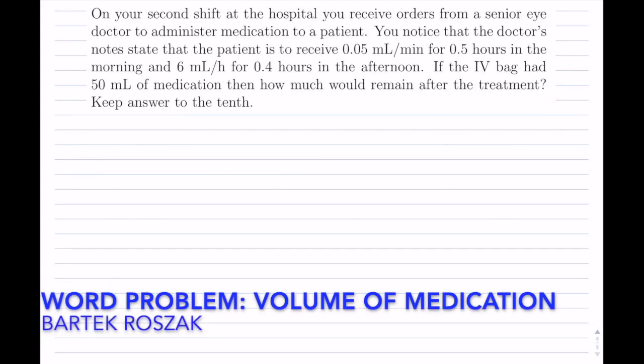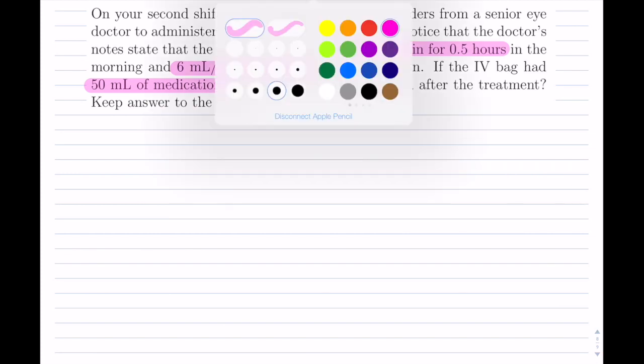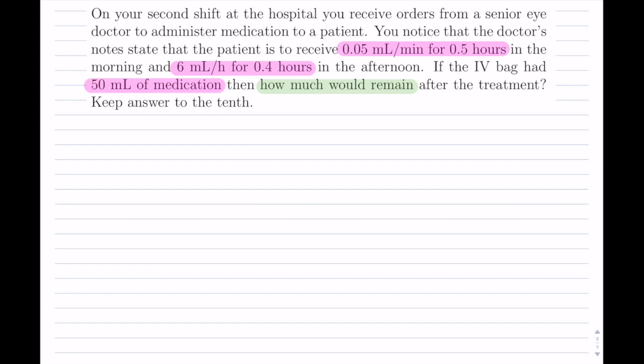On your second shift at the hospital, you receive orders from a senior eye doctor to administer medication to a patient. You notice that the doctor's notes state that the patient is to receive 0.05 mL/min for half an hour in the morning and 6 mL/h for 0.4 hours in the afternoon. If the IV bag had 50 mL of medication, then how much would remain after the treatment? Keep answer to the tenth.